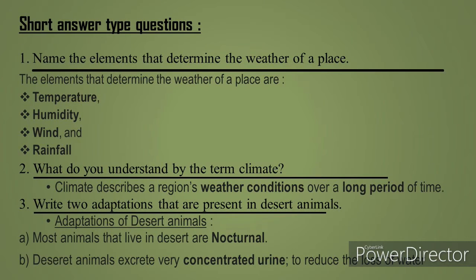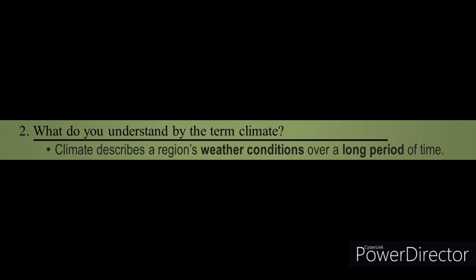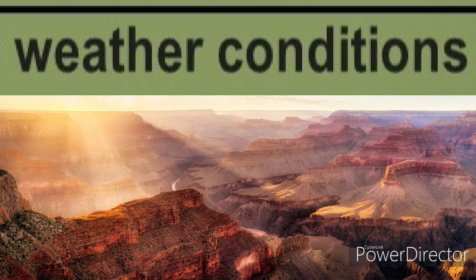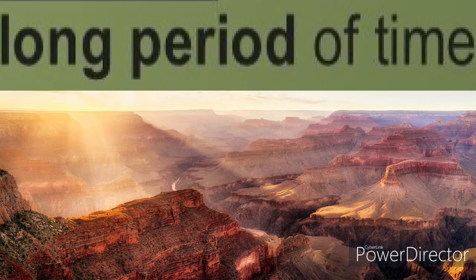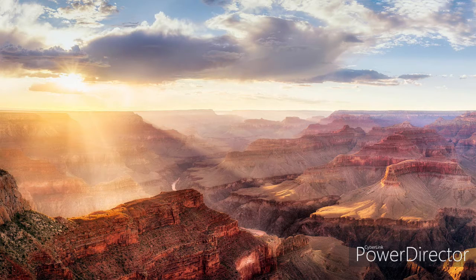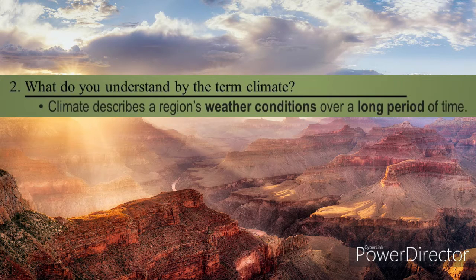The amount of moisture present in air is called humidity. So the four elements are temperature, humidity, wind, and rainfall. The second short answer question: what do you understand by the term climate? Climate describes a region's weather conditions over a long period of time. Two key phrases: 'weather conditions' and 'long period of time.'